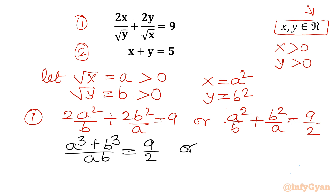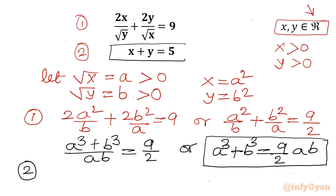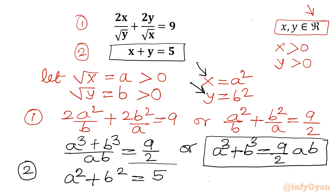Multiplying both sides by ab gives a cubed plus b cubed equals 9 over 2 times ab. This is our first equation after substitution. For the second equation, x plus y equals 5 becomes a squared plus b squared equals 5.